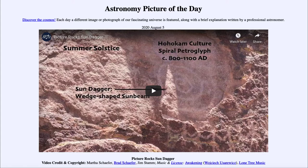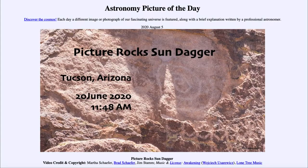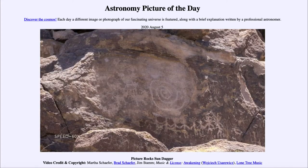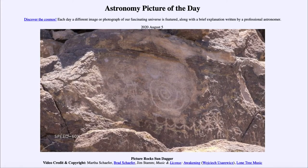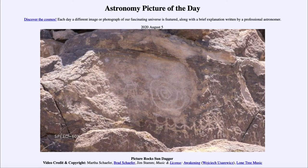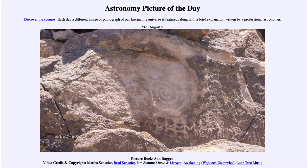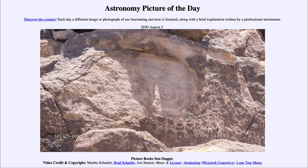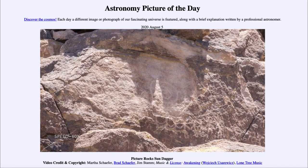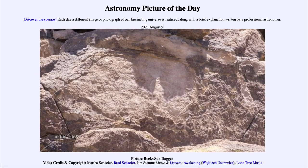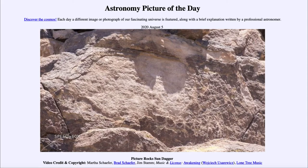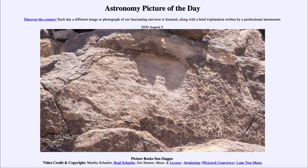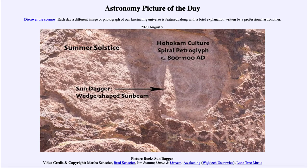Now when we run the video, it runs at 60 times speed and you can watch the sun slowly moving as it brings areas out of shadow towards that spiral pattern marked into the rock. As it gets closer, you see that dagger of light begin to appear and point towards different parts of that circle. Then as it continues, that dagger begins to disappear as the entire area comes into sunlight.